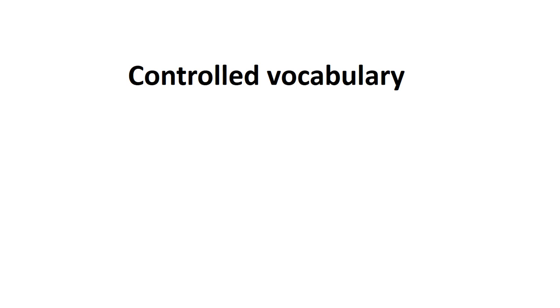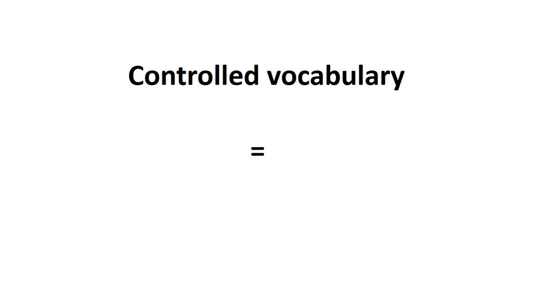I just have to figure out how to ask the library for those resources in a way that it understands. Unlike Google, the library relies on what we call controlled vocabulary, which is just a fancy way to say that it uses expert language. This may be daunting, especially if you're doing research on a topic you don't know much about, but the library can help you find this expert language.